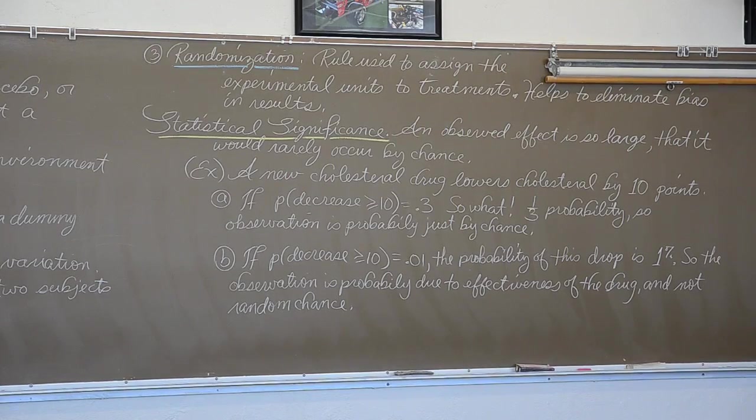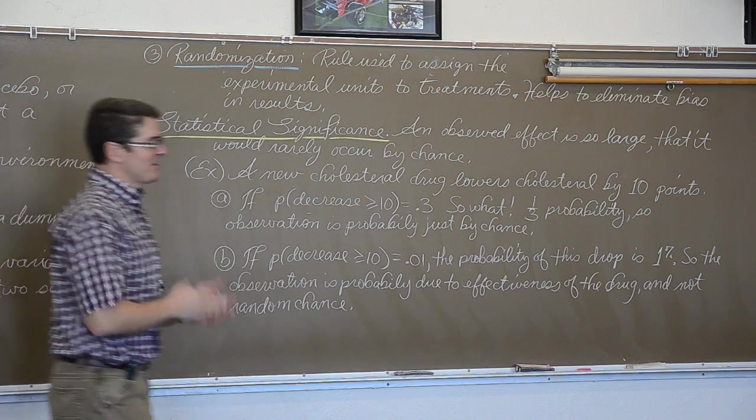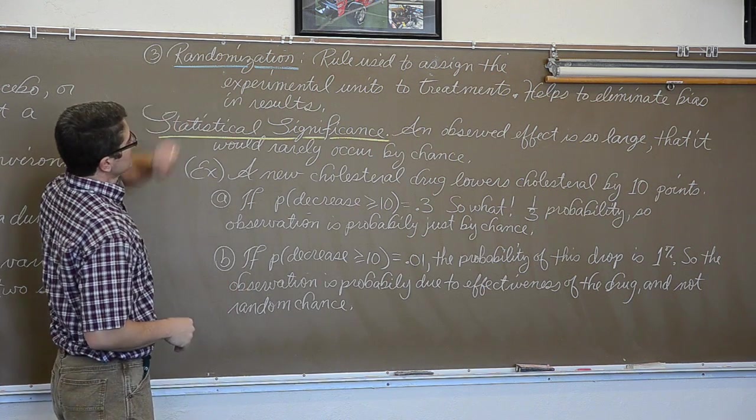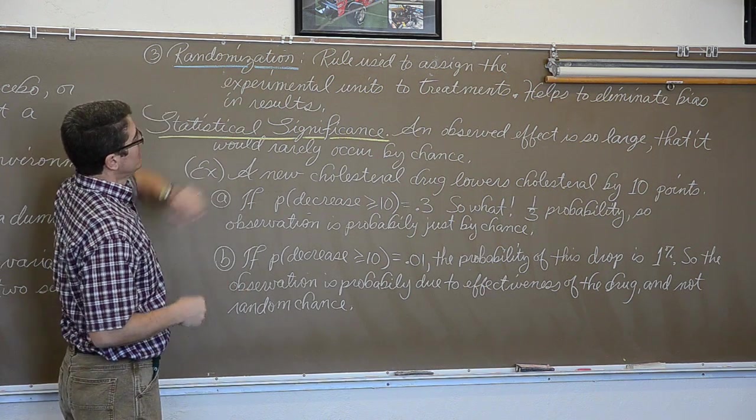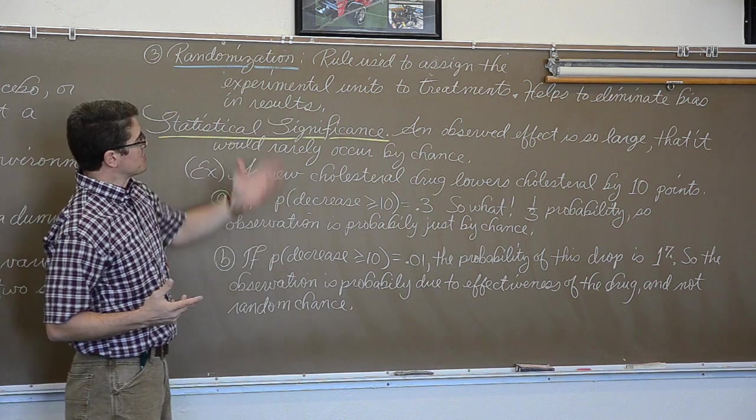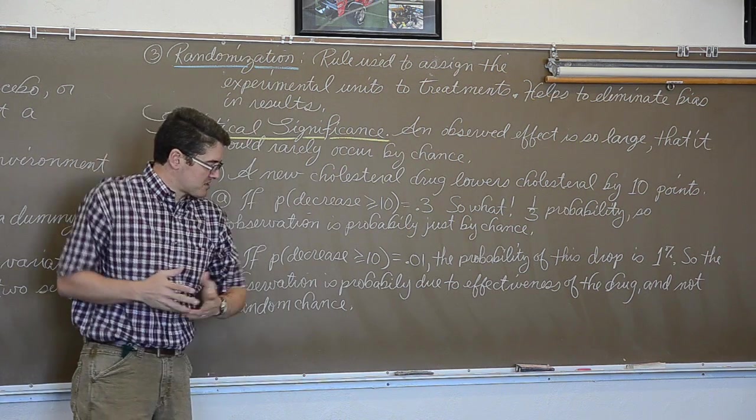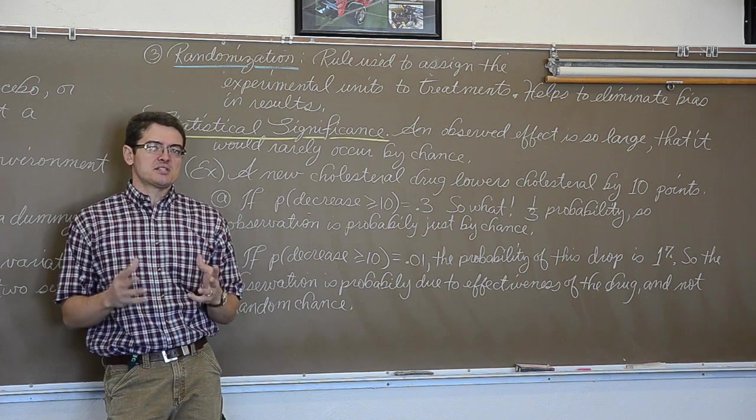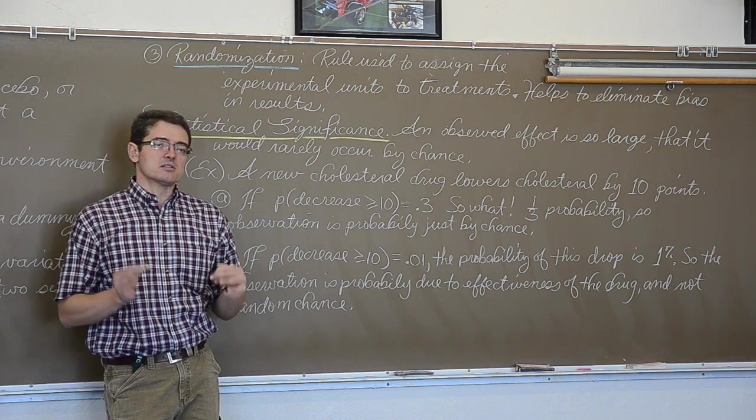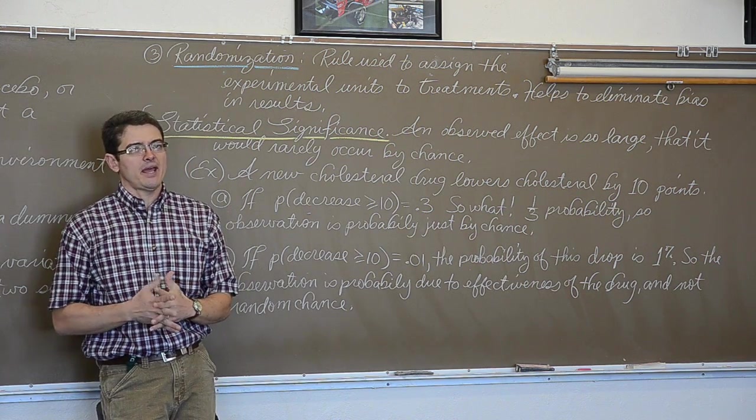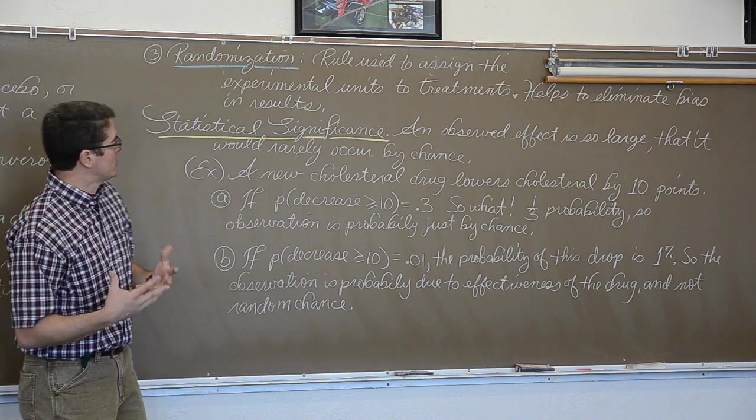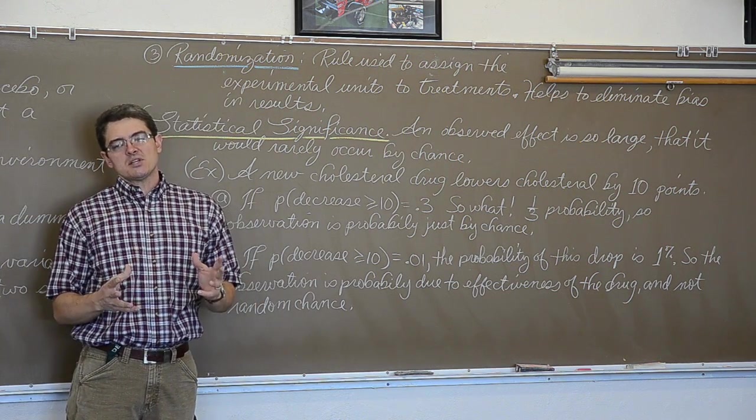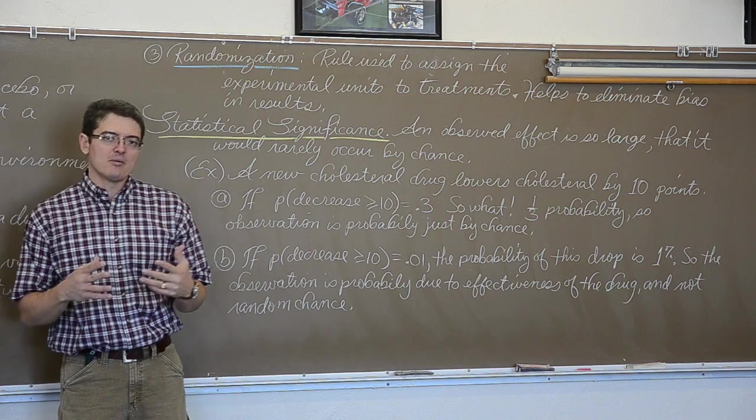Okay, randomization in an experiment. The third and final good principle of experimental design. Randomization. You use a rule to assign the experimental units to treatments. Helps to eliminate bias in the results. The mathematical basis of statistics is the study of probabilities. Probabilities is the study of random behavior. If you do not have randomness in your experiment, in your data, there is no mathematical basis for the mathematics of probability.